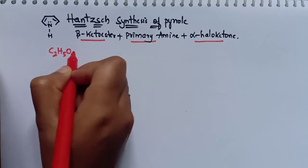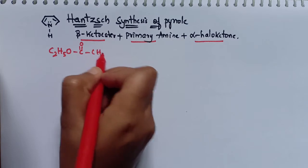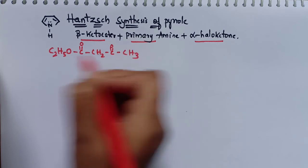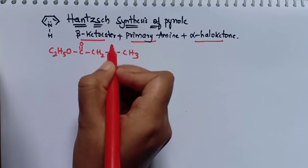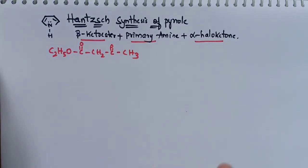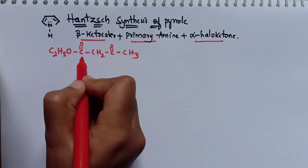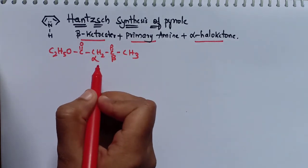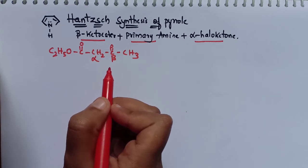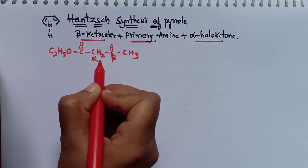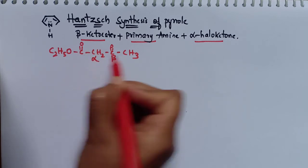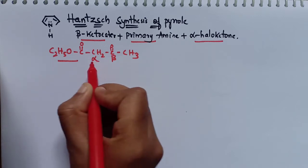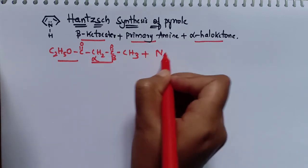The beta-keto ester has the structure: C2H5-O-CO-CH2-CO-CH3. In this structure, the carbon directly attached to the functional group (the ester) is called the alpha carbon, and the next carbon is called the beta carbon — hence the name beta-keto ester. The primary amine used is NH3, which has a lone pair of electrons on nitrogen.